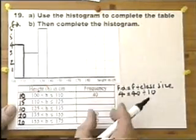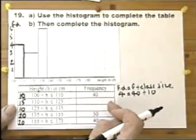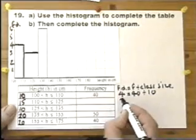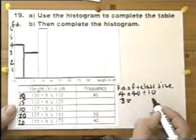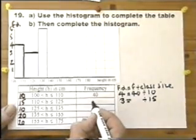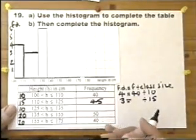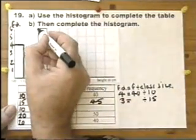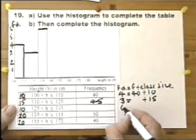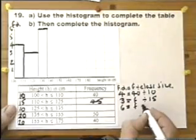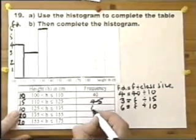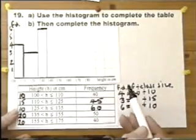We can now use that to read the other bars. The second bar goes up to 3, so the frequency density is 3. The class size is 15, therefore frequency equals frequency density multiplied by class size: 3 × 15 = 45. Moving on — the third bar is 10 wide and goes up to 6, so its frequency density is 6. The frequency is missing from the table, but the class size is 10, so frequency = 6 × 10 = 60.